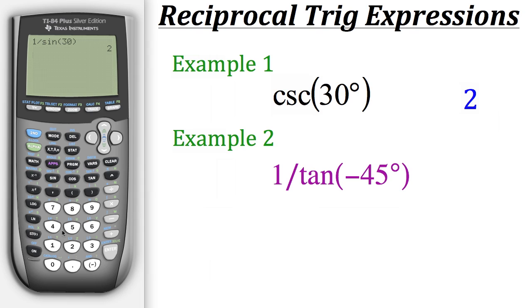We'll first press 1 and then divide, and now we'll put in tangent negative 45 degrees. Since we're already in degree mode, we don't need to change it, so we could just hit enter.